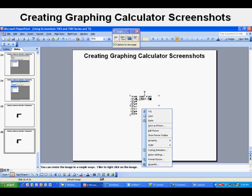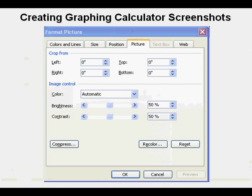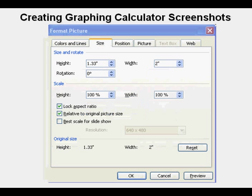You can resize the image in a couple ways. I like to right click on the image then go down here to Format Picture. We get the Format Picture dialog box. Go to the Size tab. We see that the height of the original image is 1.33 inches.